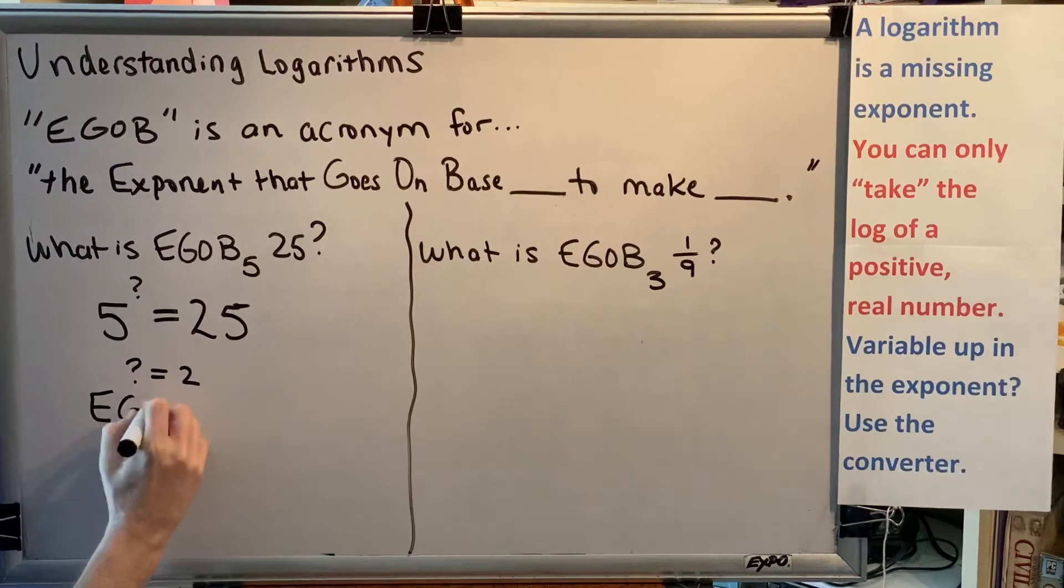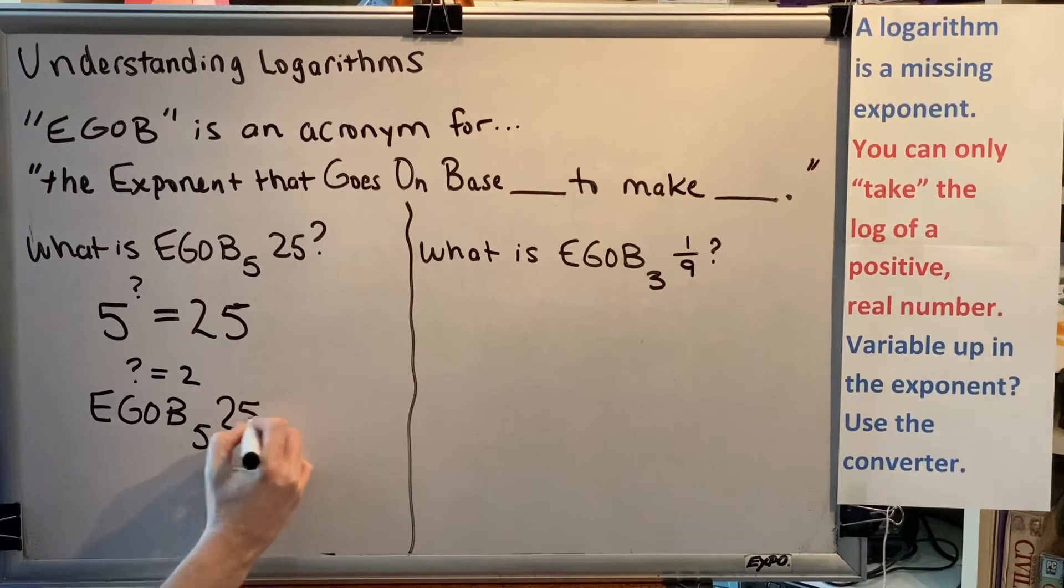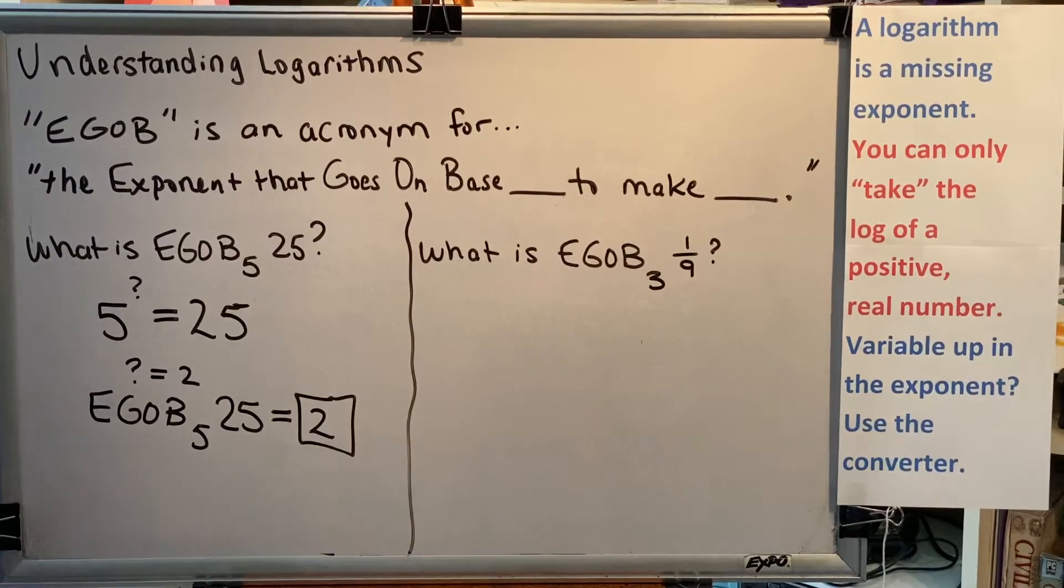Therefore, EGOB 5, 25 equals 2. Let's try another one.